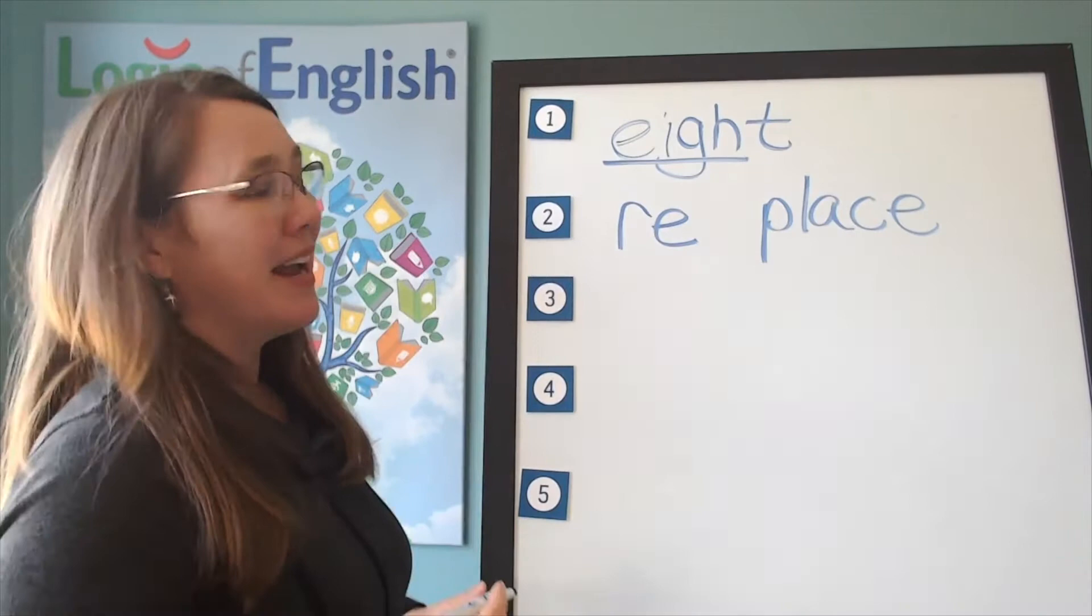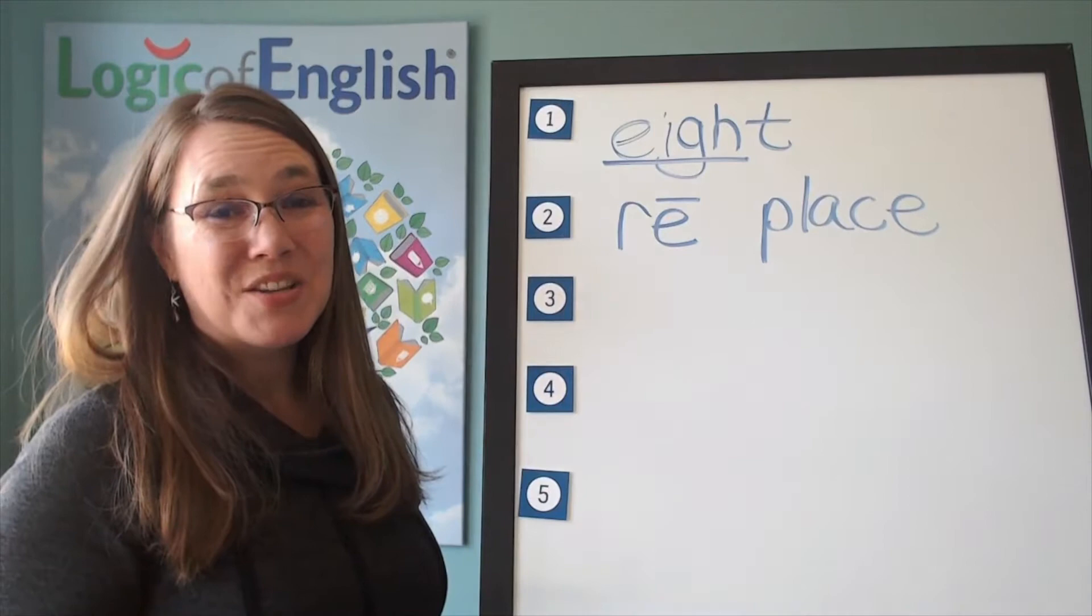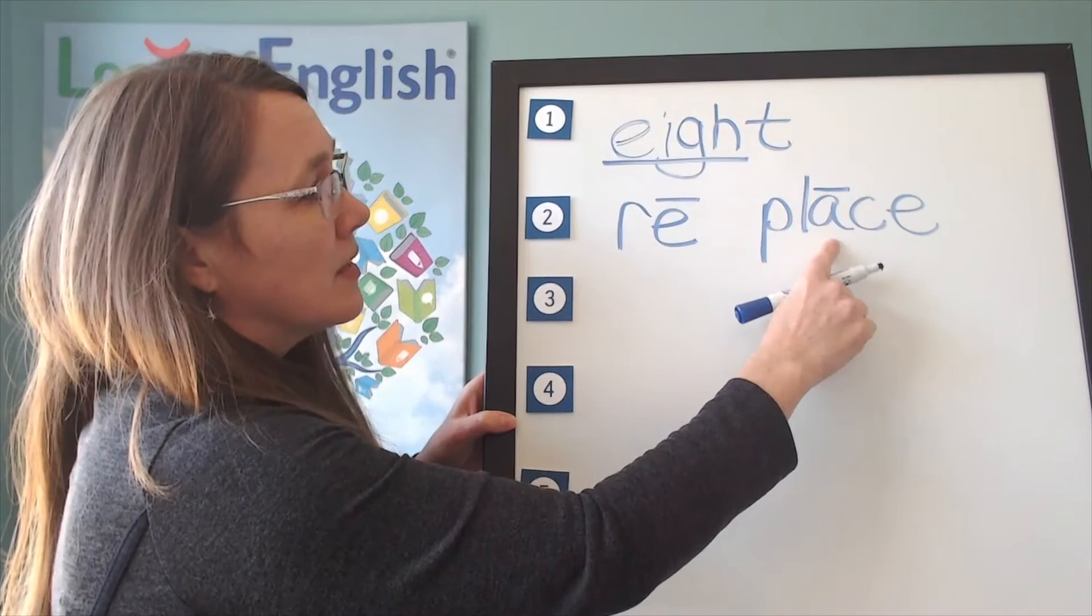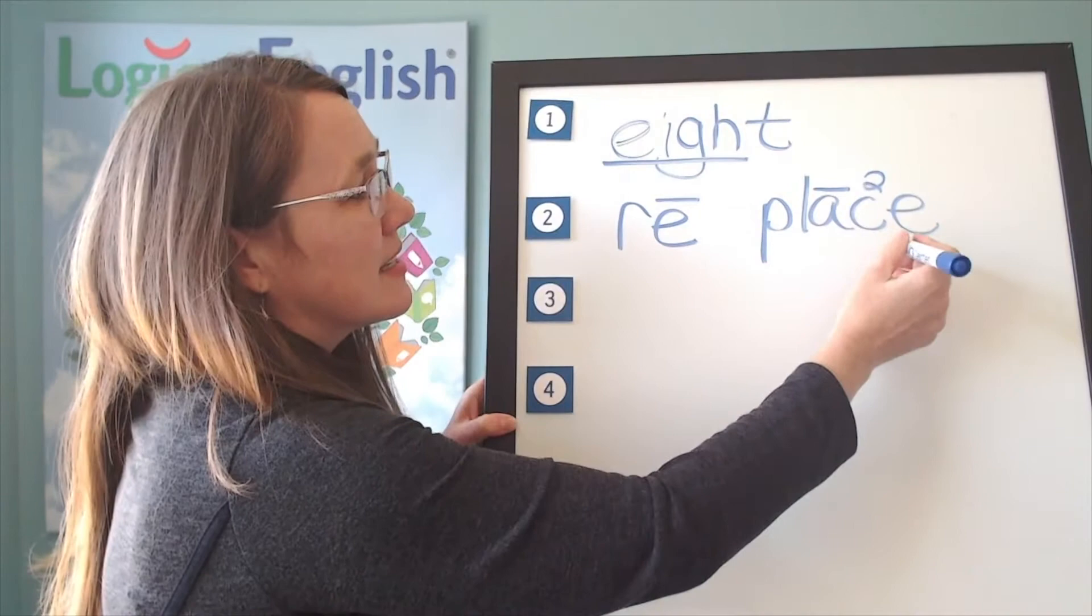All right. How will we mark replace? We'll put a line over the E. Why did the E say its long sound? A, E, O, U usually say their long sounds at the end of the syllable. How else will we mark it? We'll put a line over the A. And what sound of C-S do we hear? The second sound, S. Replace. We have a silent final E.